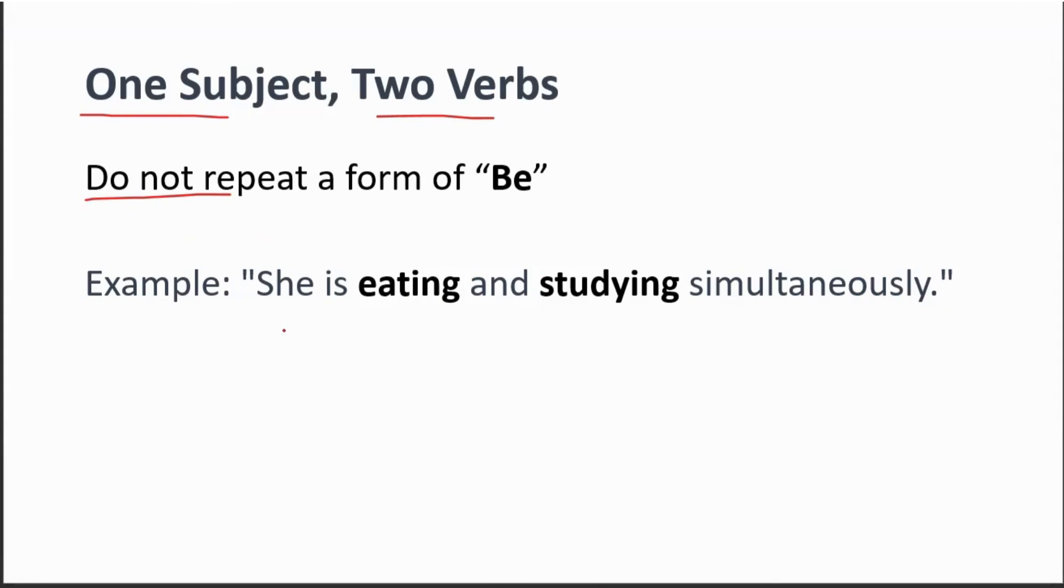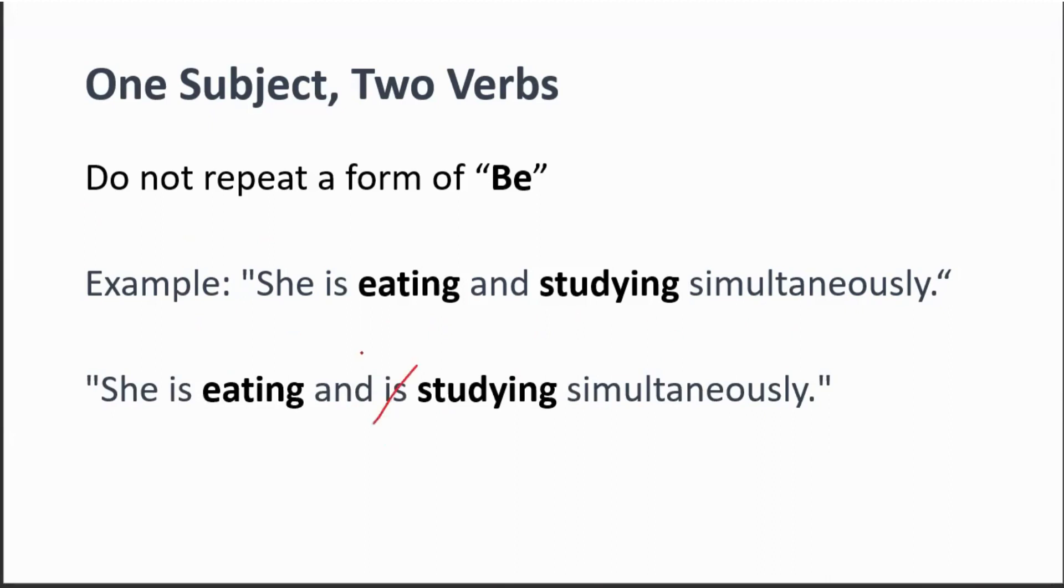So the correct sentence would be: she is eating and studying simultaneously. We do not need to use is one more time. We do not need this is.